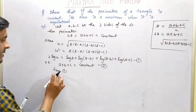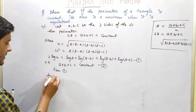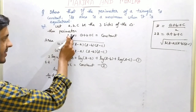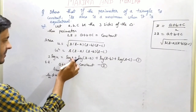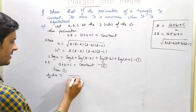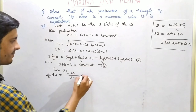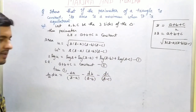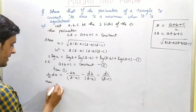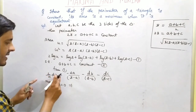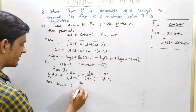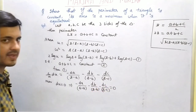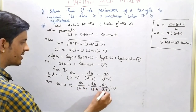From equation 1, differentiating (since s is constant, its differentiation is 0): (2/u)du = -da/(s-a) - db/(s-b) - dc/(s-c). Setting du = 0: da/(s-a) + db/(s-b) + dc/(s-c) = 0 — equation 3. Differentiating condition (equation 2): da + db + dc = 0 — equation 4.